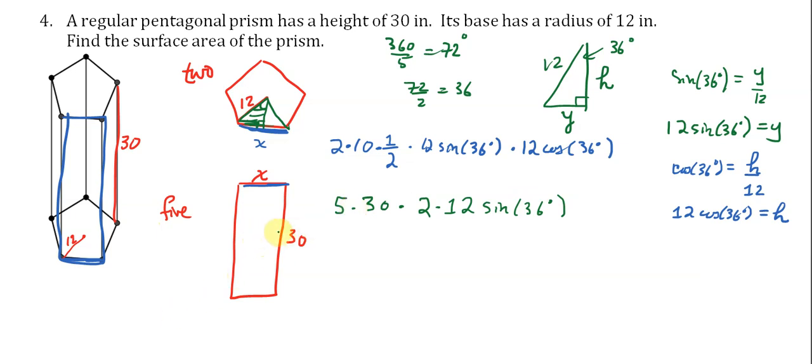So now we have kind of a big expression here. And that's perfectly fine. We're going to do one calculation, do the other calculation, and then add them all up. So we can actually just type all of that into a calculator. And I get a grand total of 2,800.7876. And our units here are inches squared.